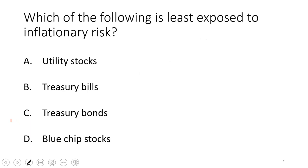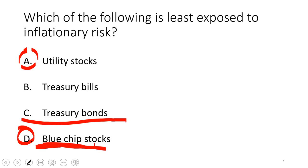Which of the following is least exposed to inflationary risk? Blue-chip stocks have a proven track record in good and bad times and can pass inflation on to customers — as McDonald's recently demonstrated. Utility stocks don't raise their dividends as much. Between a utility stock and a blue-chip stock, the blue-chip is better positioned against inflation. The most exposed would be a long-term fixed-rate bond. The answer is D, the blue-chip stock.